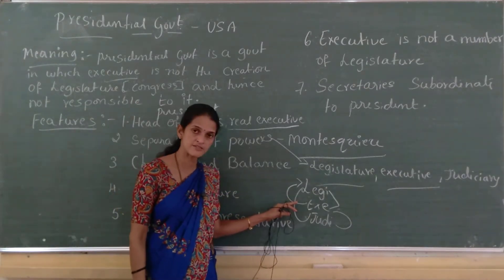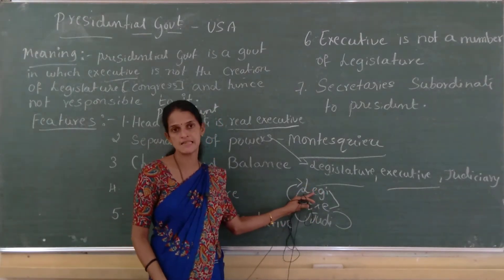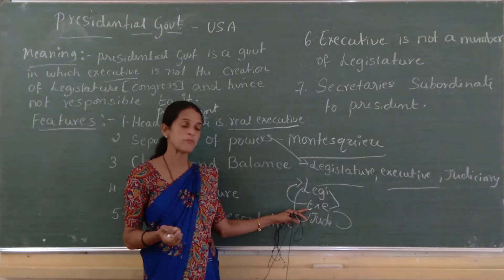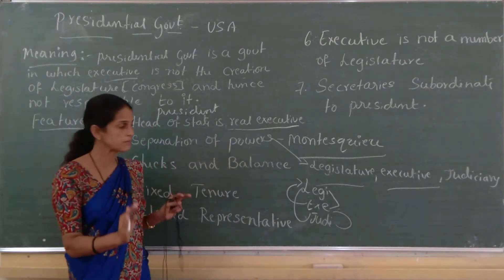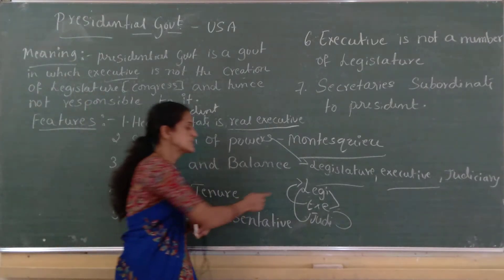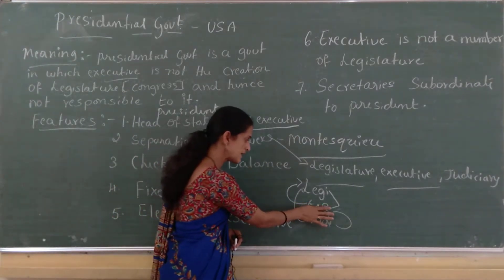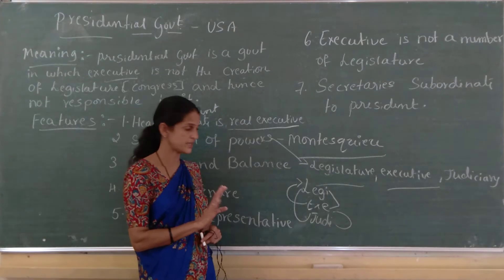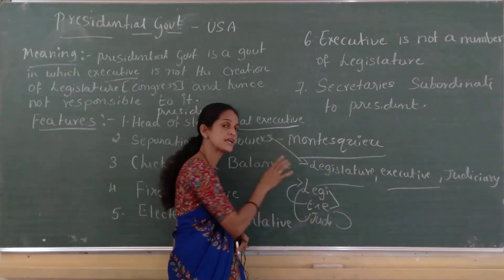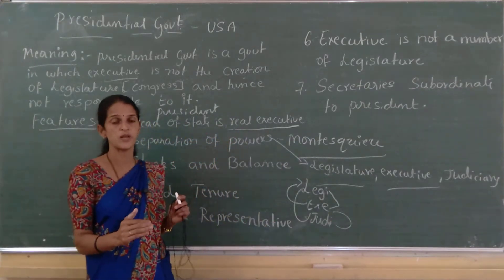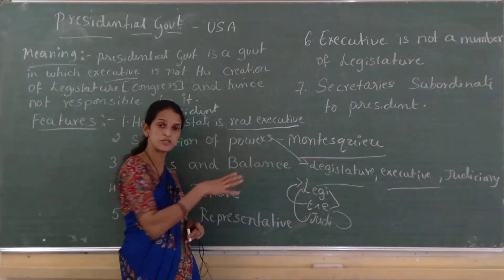The legislature controls the powers of the executive, the executive controls the powers of the legislature, and the third organ — the judiciary — controls the powers of both the legislature and the executive.